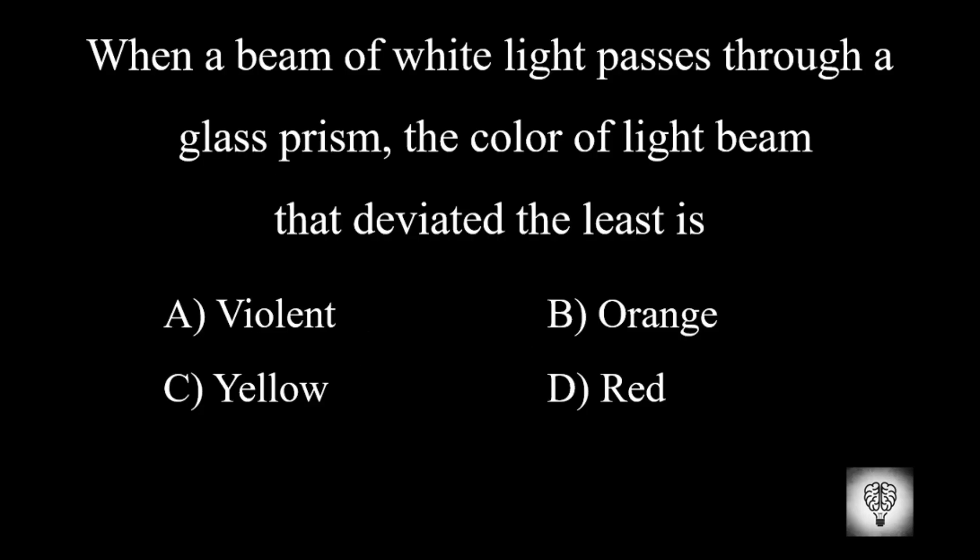When a beam of white light passes through a glass prism, the color of light beam that deviated the least is? Correct answer is red.